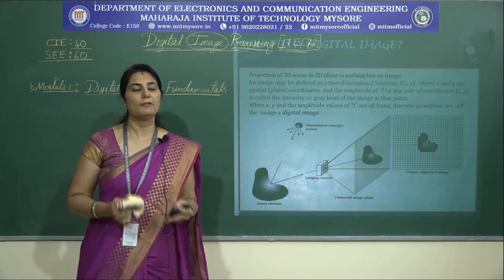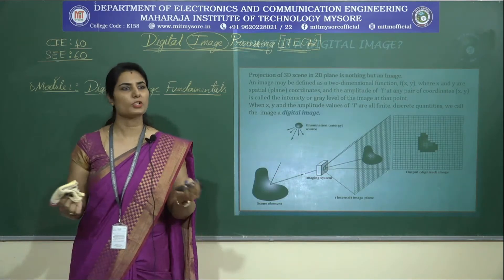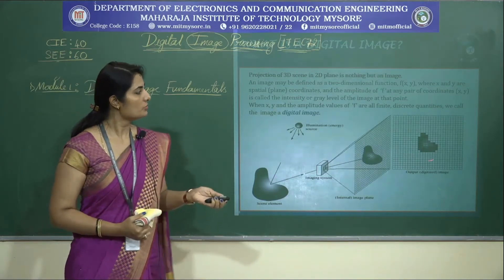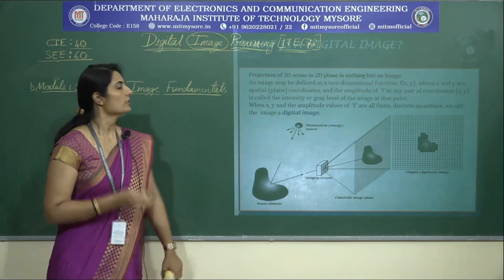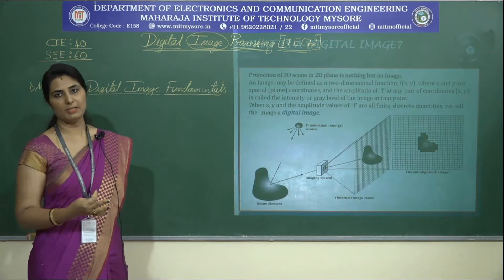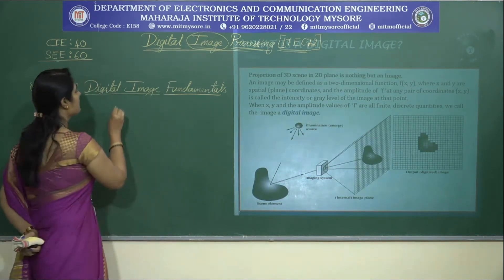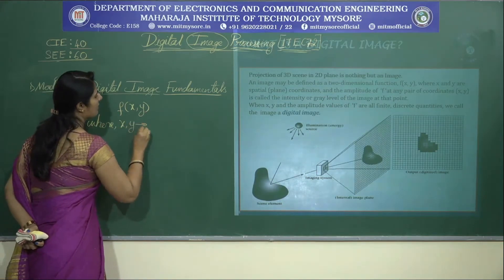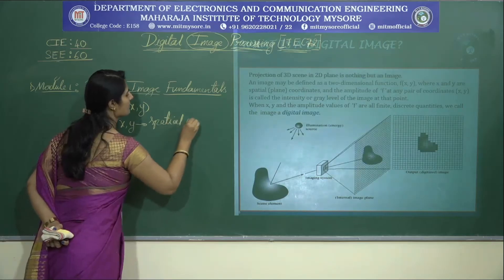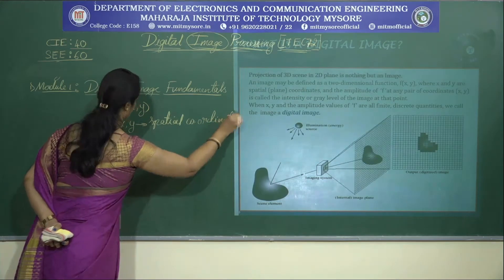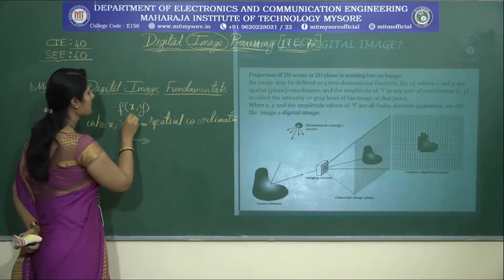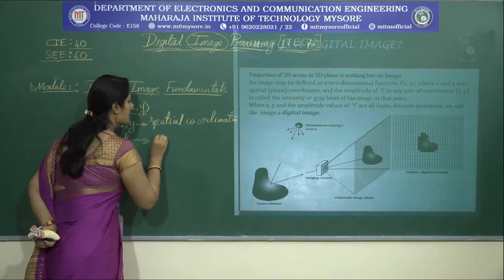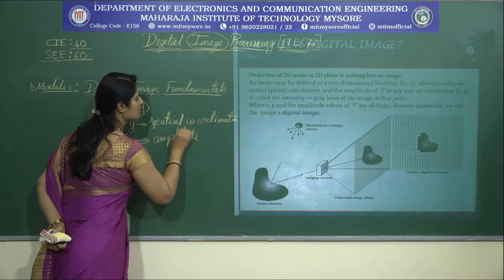In this world, everything is in analog form — the three-dimensional pictures and images that we see are all in analog form. Presenting these 3D scenes on a 2D plane forms an image. An image can be defined as a two-dimensional function f(x, y), where x and y are spatial coordinates, and the amplitude f at any pair of coordinates x, y gives the intensity level or grey level of the image at that particular point. This is called the amplitude or intensity.